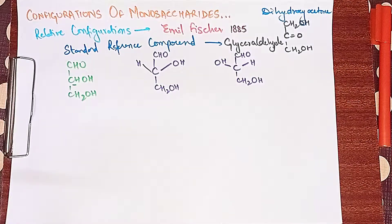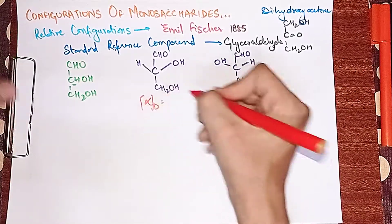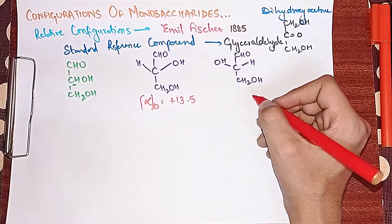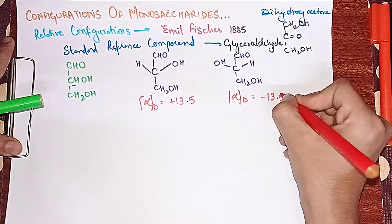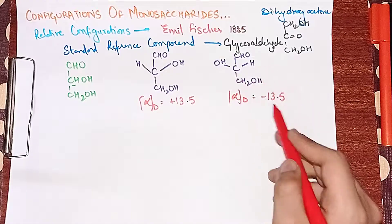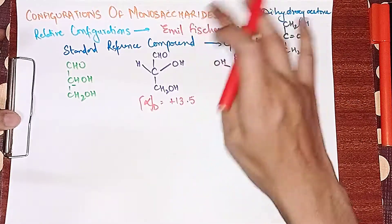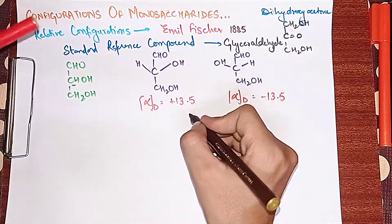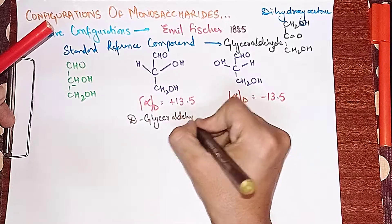We observed the specific rotation (alpha D) of both enantiomers. The right-hand side isomer was found to have alpha D of plus 13.5, and the other was found to be minus 13.5. The one with OH on the right is named D-glyceraldehyde, and the other with OH on the left is the L-isomer.